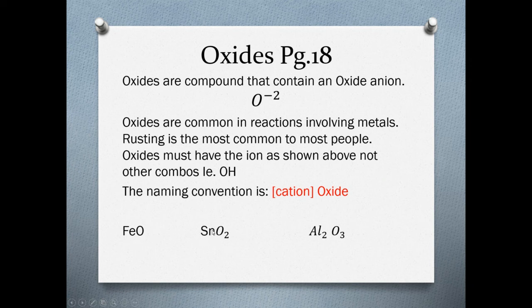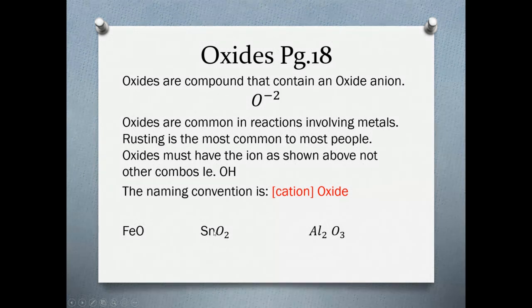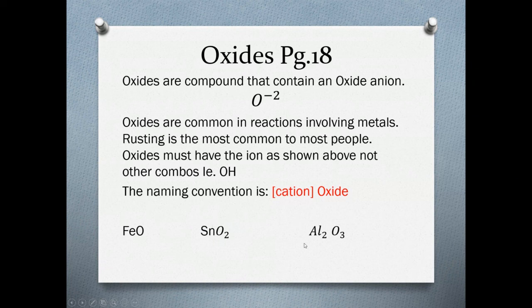This one here, tin, another variable oxidation number metal with our oxide. How do I know which one it is? Well I know that this is two negative. If I use the tin two version, I would cancel out and see no numbers here. If I use a four version, I would get Sn2O4 and then dividing by two I end up with this. So that is tin four oxide. And again, same idea with the aluminum oxide.